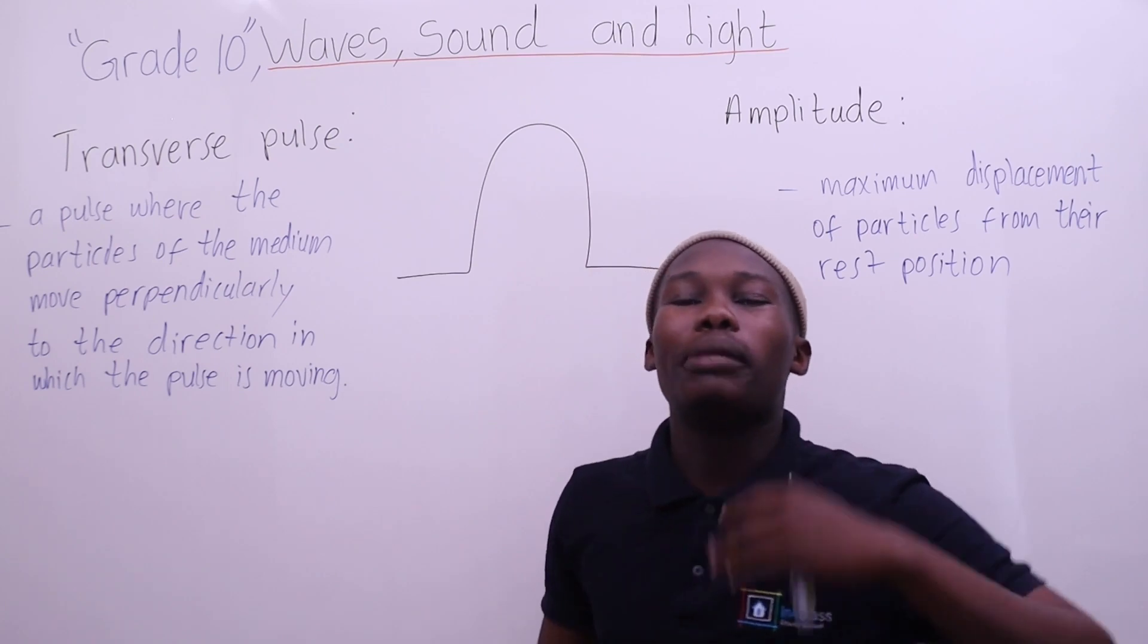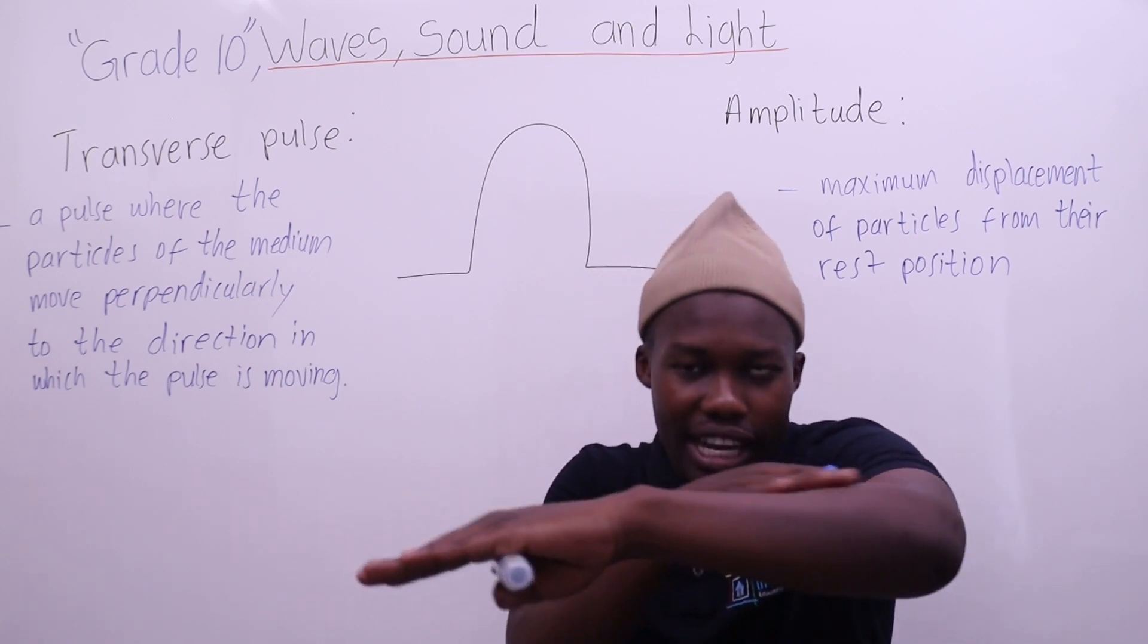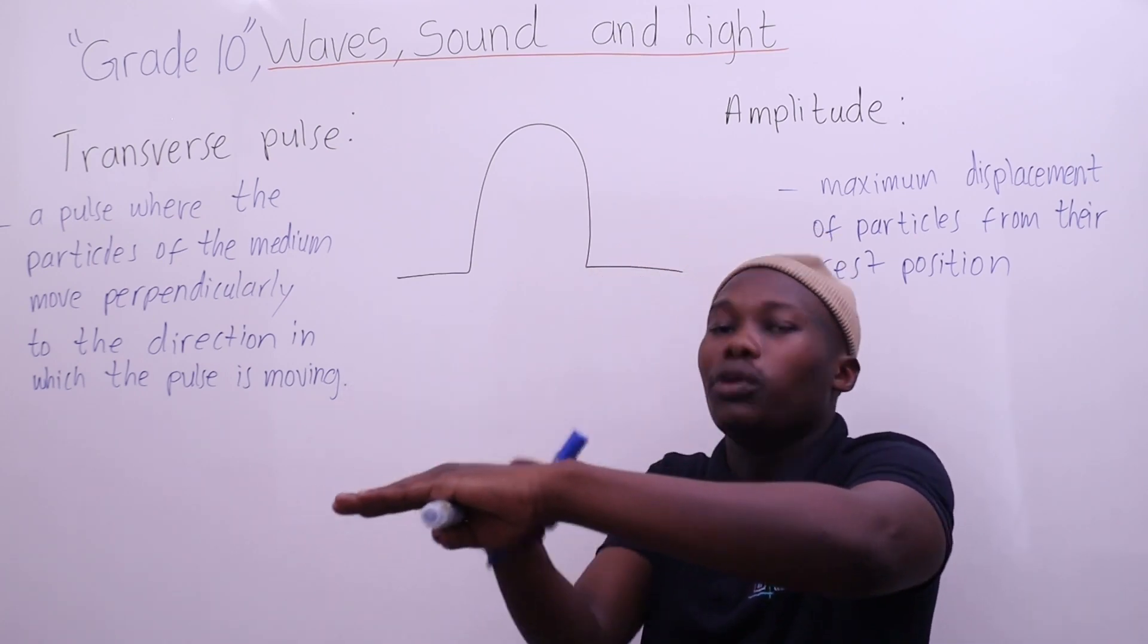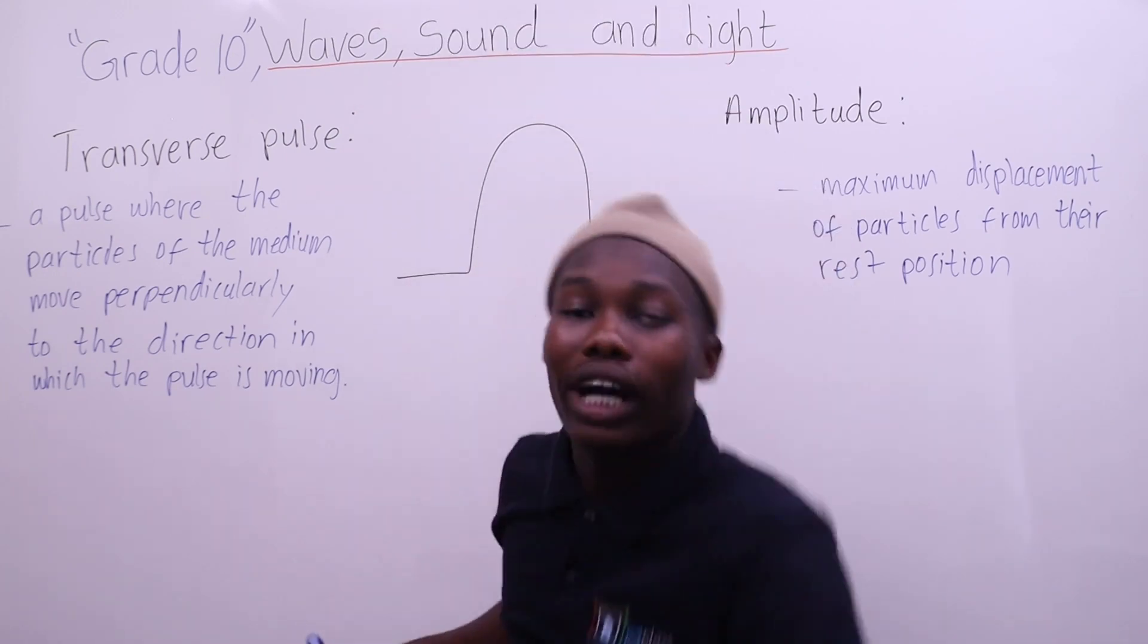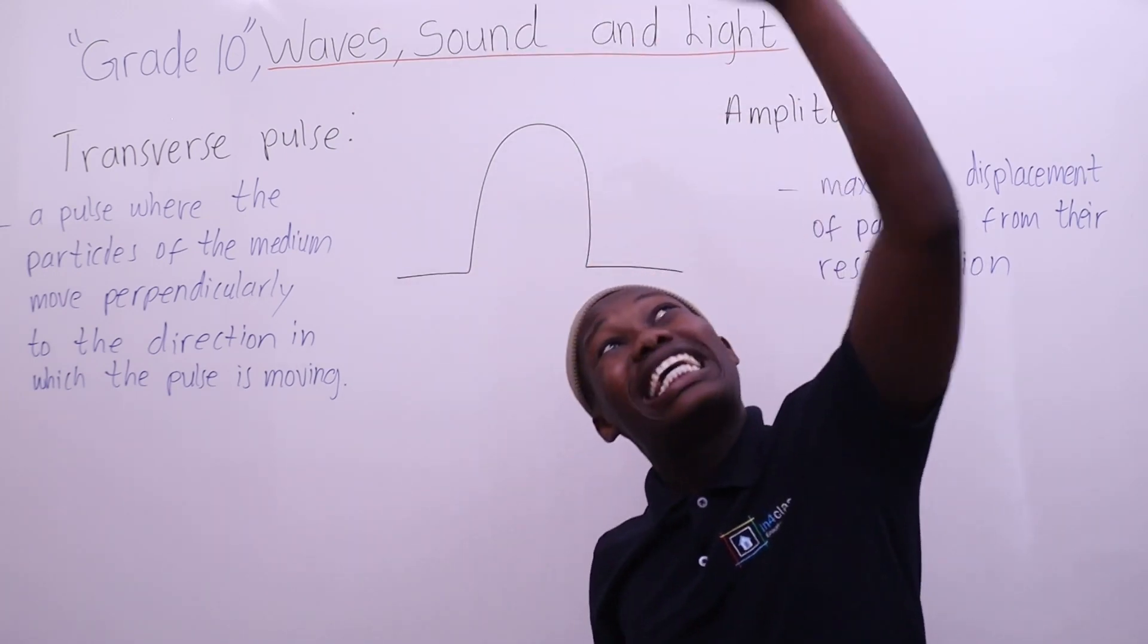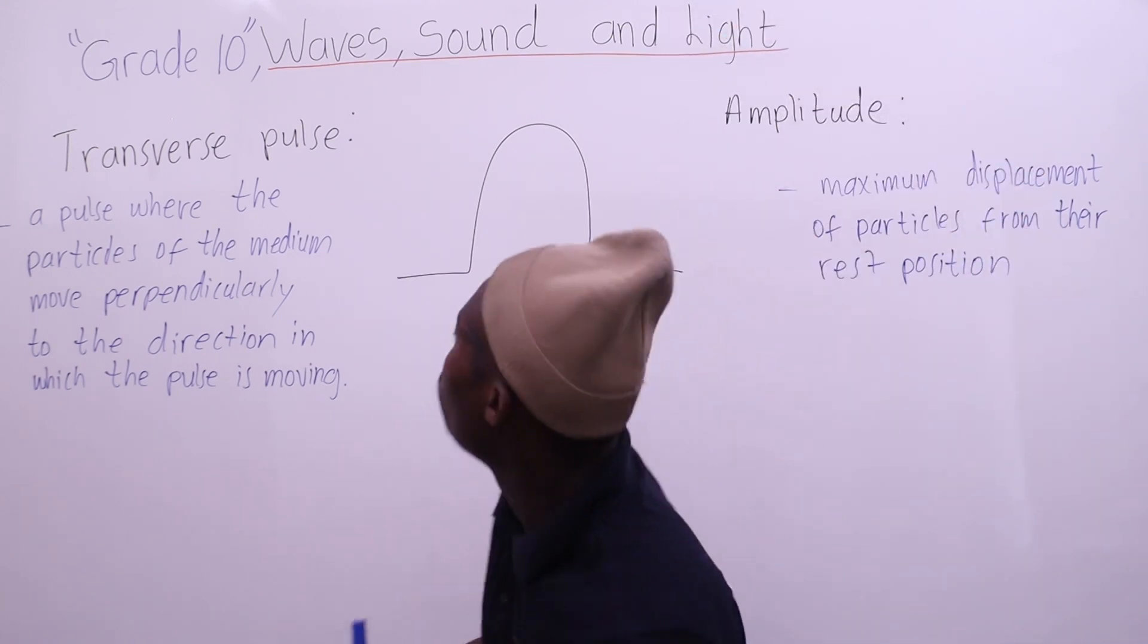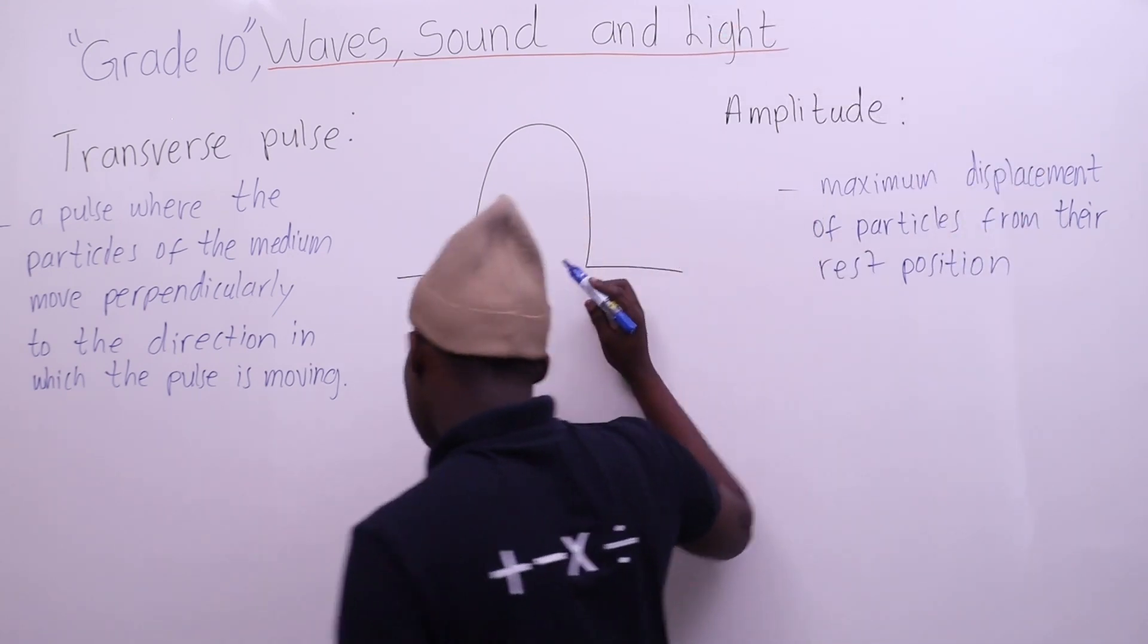The particles of the medium are made for a moment. You know what? You can see it. You have the highest point or the lowest point. This is the amplitude. What is the distance?